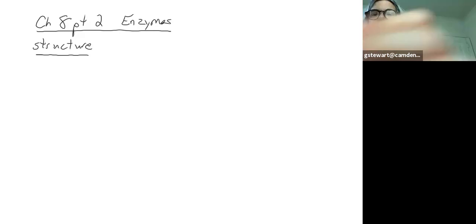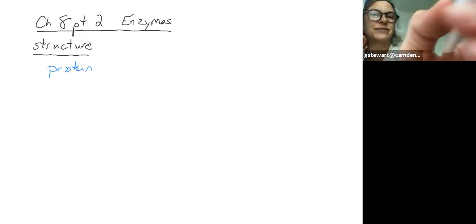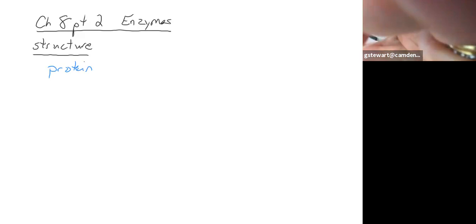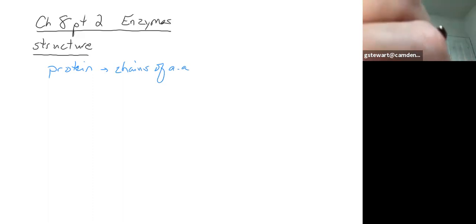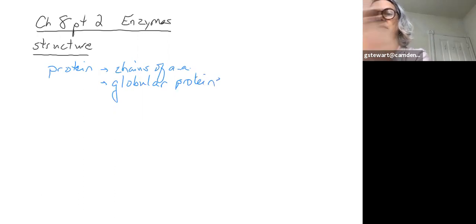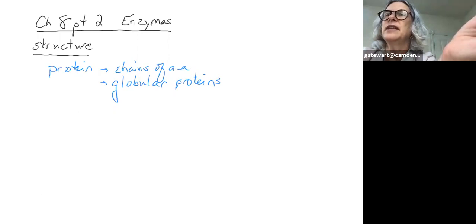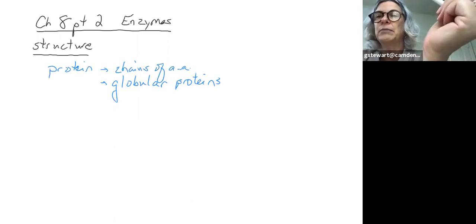Let's start, just like we always start, with structure first and then functions. The structure of an enzyme: they are all proteins, and remember proteins are made of chains of amino acids. Enzymes are called globular proteins because they are not particularly alpha helices or any other specific shape, but kind of like a blob or a glob.